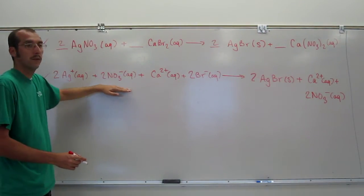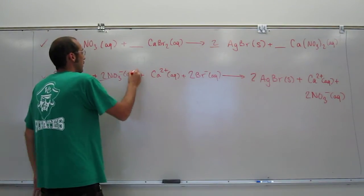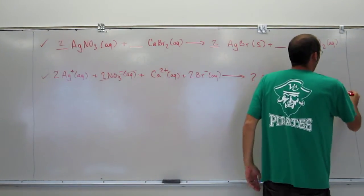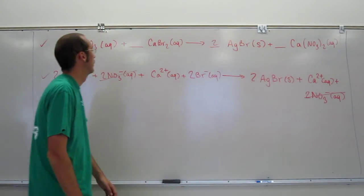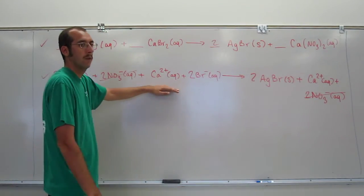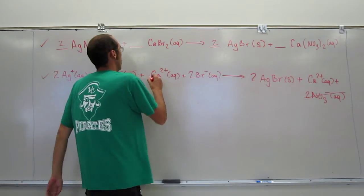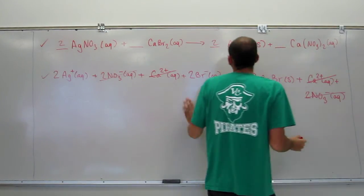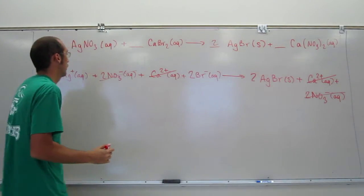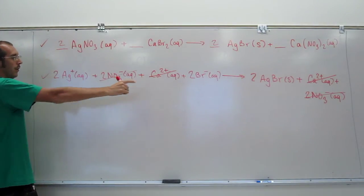Is 2NO3 minus in that side of the equation? So you can cancel it out. What we're canceling out are called the spectator ions. Is Ca two plus on both sides of the equation? Cancel it out. What about two Br minuses?